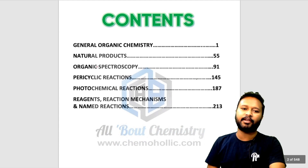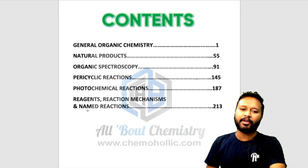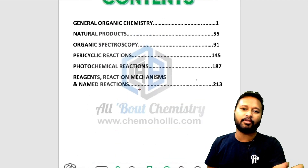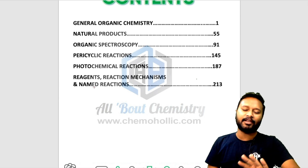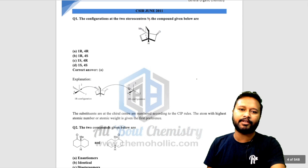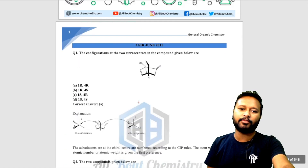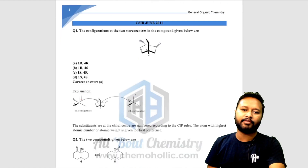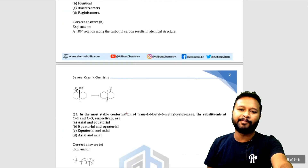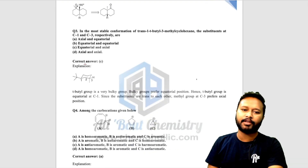You can see the contents: the chapters include General Organic Chemistry, Natural Products, Organic Spectroscopy, Pericyclic Reactions, Photochemical Reactions, and Reagent Reaction Mechanism and Named Reactions combined. The total number of pages in this file is around 400 to 500, and this particular chapter alone contains around 200 to 300 pages. You can see a sample question from CSI June 2021 on General Organic Chemistry — the question is shown, along with the explanation, covering topics like confirmation of specific carbons. Below each question, the answer and a two-to-three line explanation are provided.